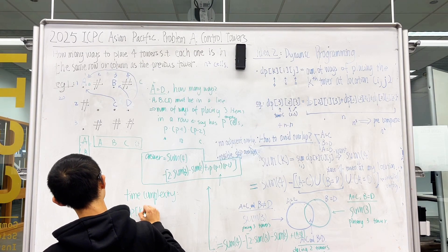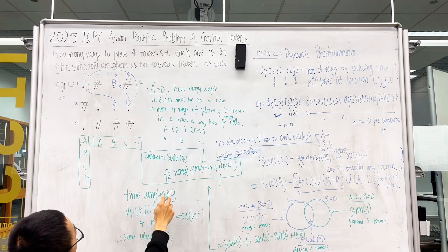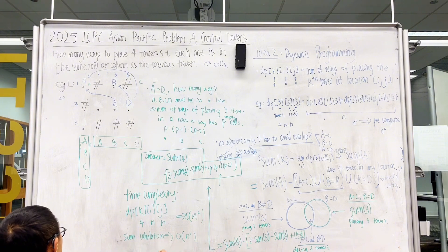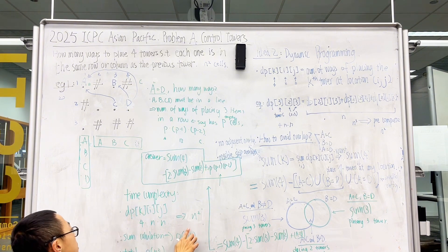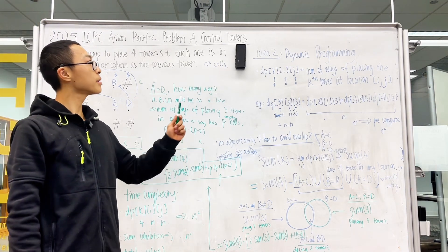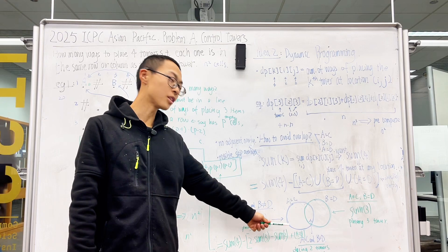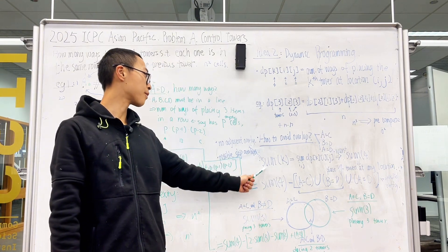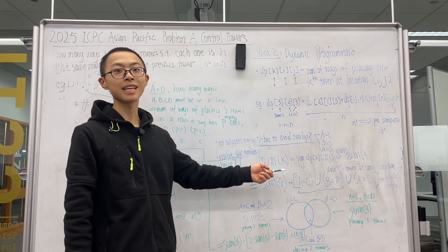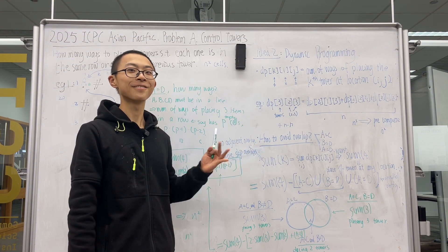The time complexity of the DP solution is O(n-squared), and the sum calculation is also O(n-squared), so the total is O(n-squared). The difficulty of this problem has two key points: dynamic programming, and the Venn diagram inclusion-exclusion to avoid double-counting. Here sum-k has a crucial definition: the ways of placing k towers arbitrarily but without adjacent overlaps. Thank you for watching.